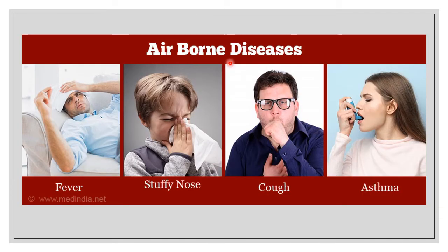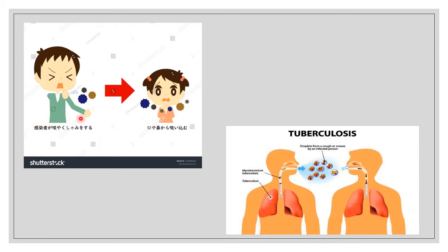This is the example of an airborne disease. Symptoms include fever, stuffy nose, cough, and asthma. If a person is infected, it can infect another person. Tuberculosis is also an airborne disease — if an infected person releases droplets and a healthy person takes them in, that person can become infected.